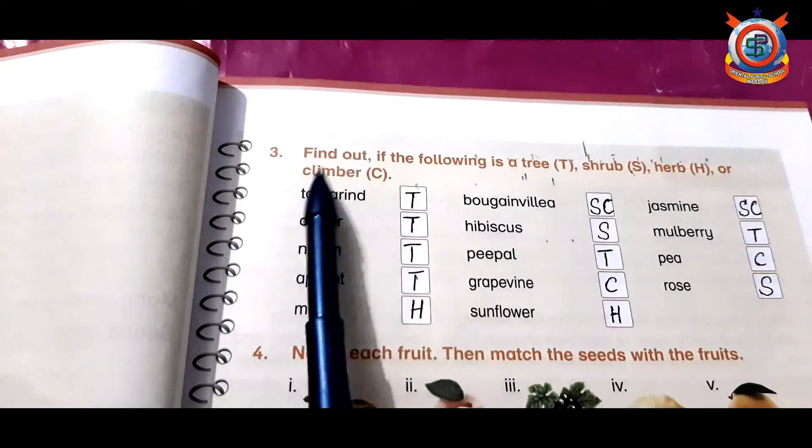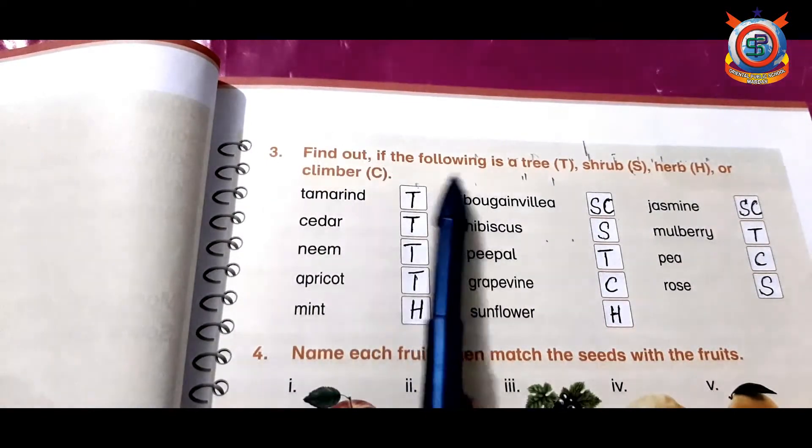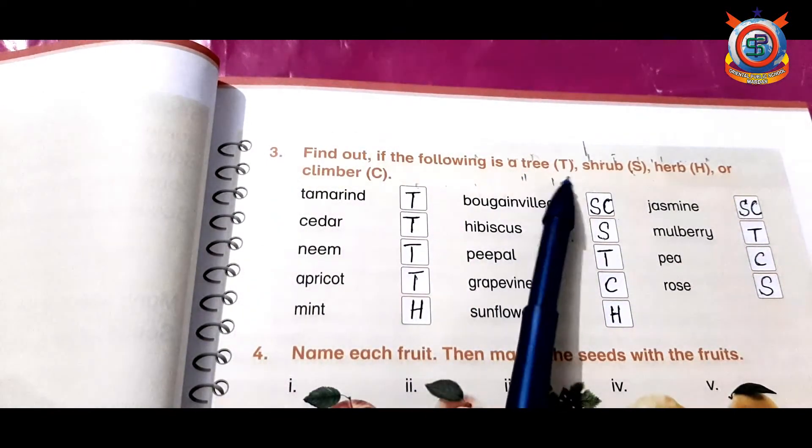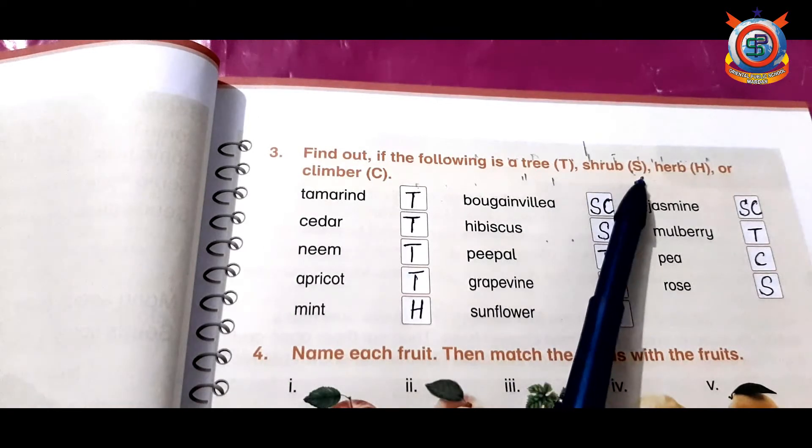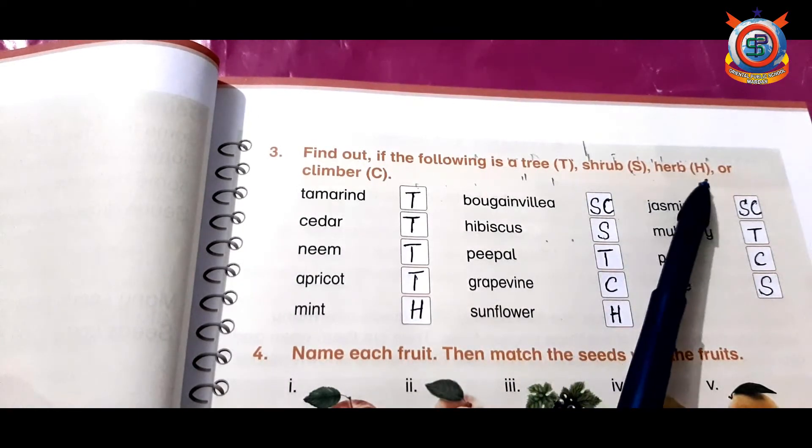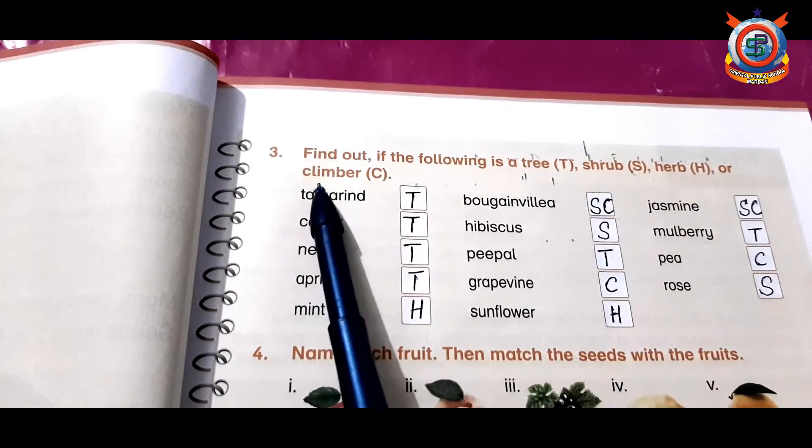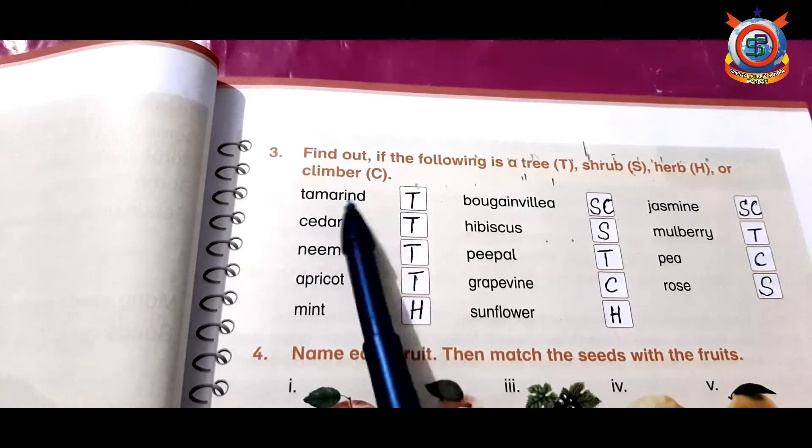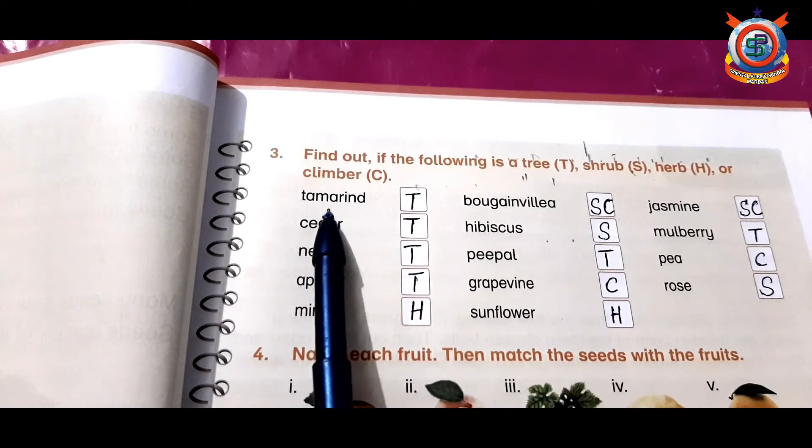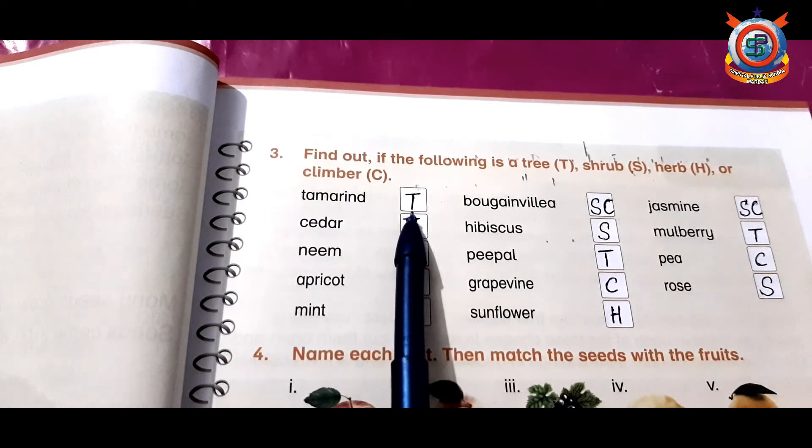Now question number three is: find out if the following is a tree, so you will write T. For shrubs write S, for herb write H, or for climber write C. Tamarind—tamarind is imli kadra, so it is a tree.